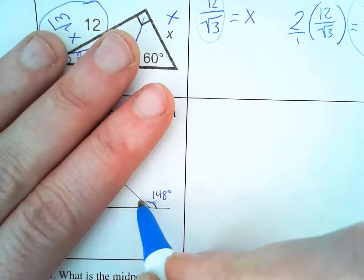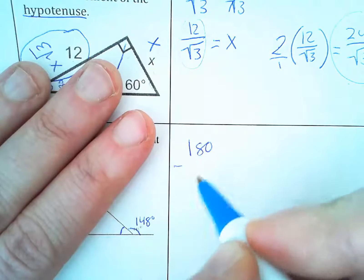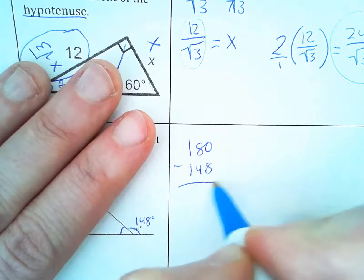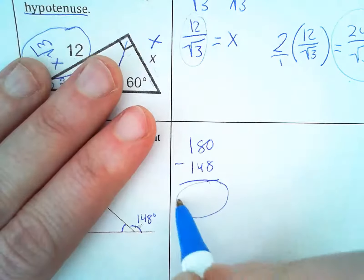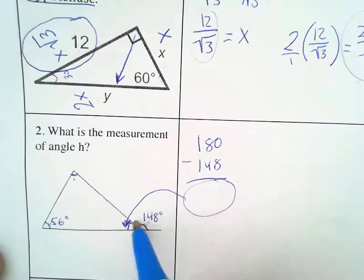So first of all, to find this measurement right here, we would have to do 180 minus 148 equals whatever that is right there. And then once we get that number,